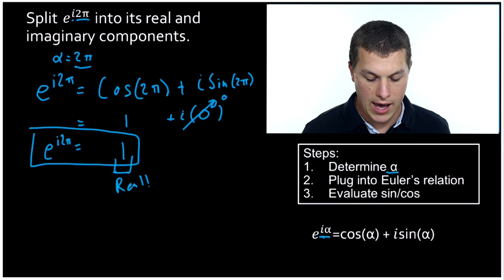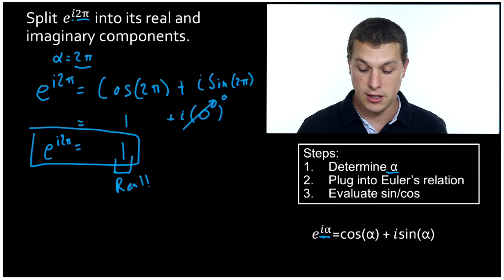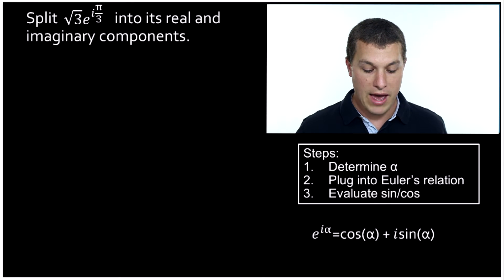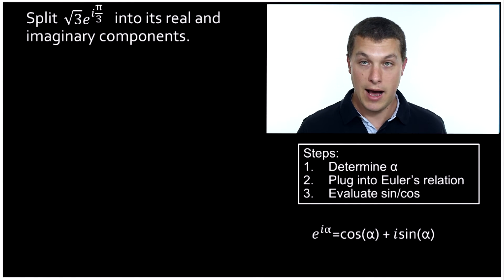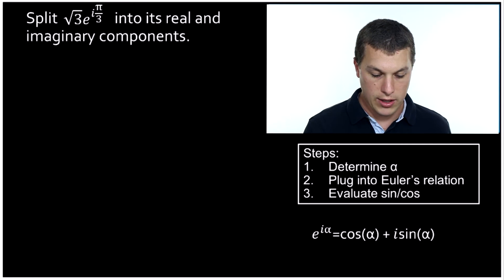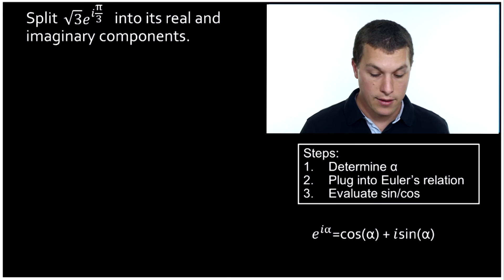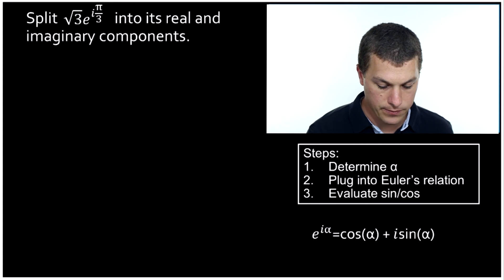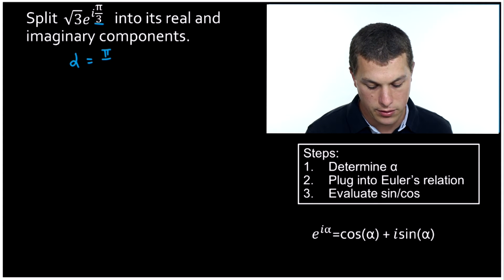Let's take a look at another problem where we'll see what it looks like when it has both a real and imaginary component. Now we have square root of three times e to the i times pi over three. What's alpha here? Alpha is just the part in our exponent that's not i, and that's going to be pi over three. So step one: alpha is equal to pi over three.